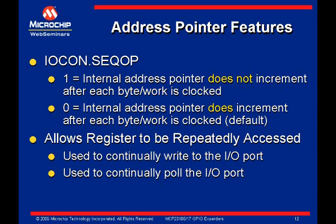Note: when the 23x17, or the 16-bit device, is in 16-bit mode — that is, the A-B addresses are paired, port A and port B are paired — and the address incrementing is turned off, the address pointer actually points to the two paired registers in a ping-pong manner. For example, the address will alternate between GPIO A and GPIO B as bytes are clocked, thereby maintaining continual access to the full 16 bits.